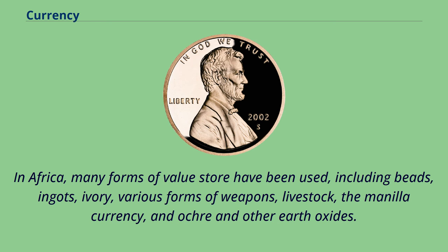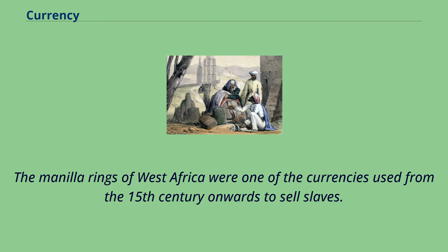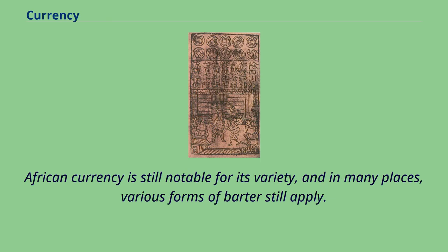In Africa, many forms of value store have been used, including beads, ingots, ivory, various forms of weapons, livestock, the Manila currency, and ochre and other earth oxides. The Manila rings of West Africa were one of the currencies used from the 15th century onwards to sell slaves. African currency is still notable for its variety, and in many places, various forms of barter still apply.